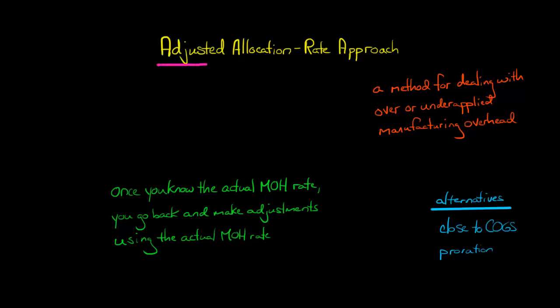In this video, we're going to discuss the adjusted allocation rate approach. This is a method for dealing with and disposing of any over- or under-applied manufacturing overhead balance. There's a difference between the actual and the applied amount of manufacturing overhead, and we have several things that we can do with that.